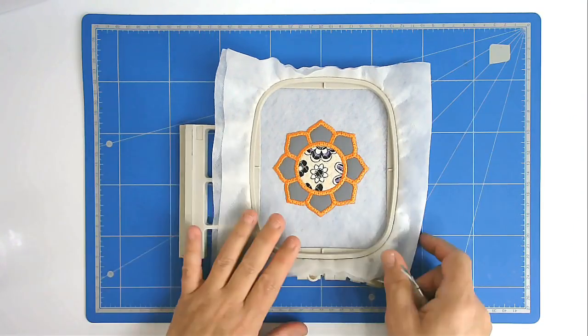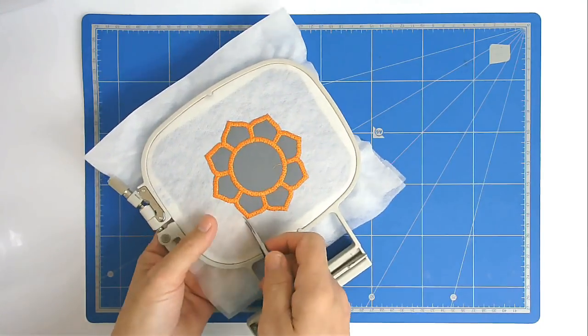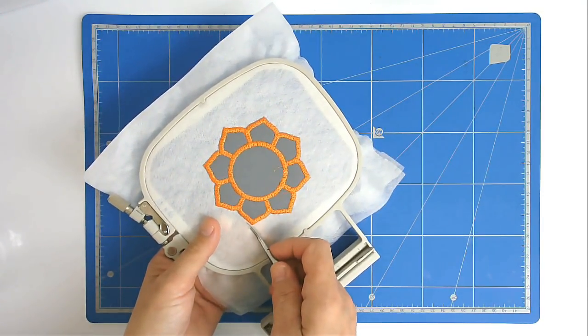We're now going to free this from the hoop, so I'm going to do this from the back. I'm just going to cut around the edge. Don't cut your stitching though.